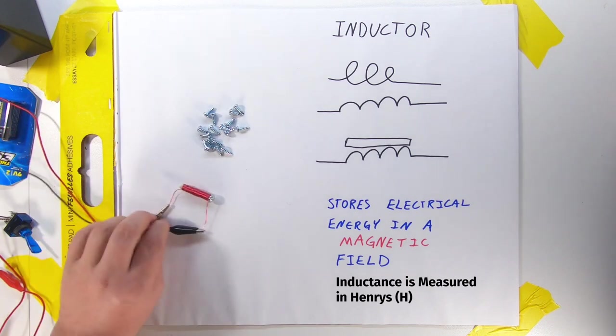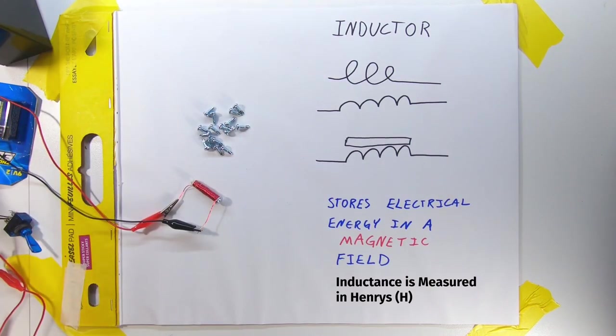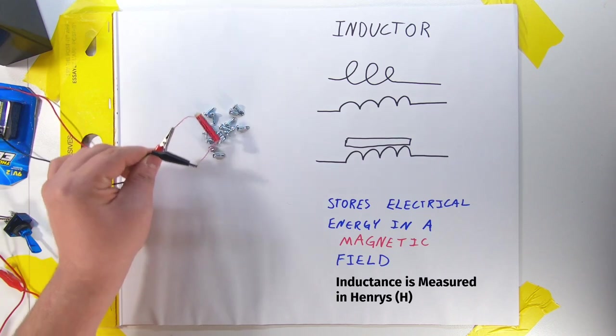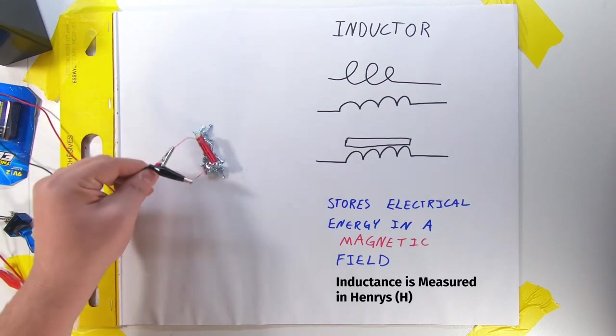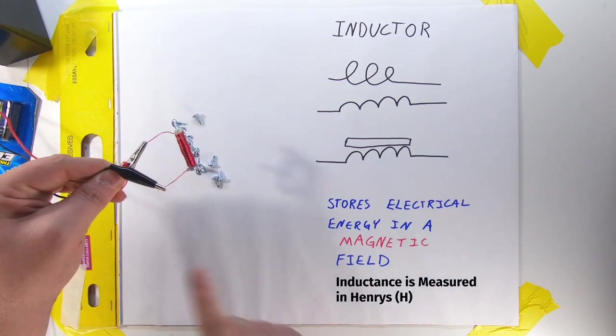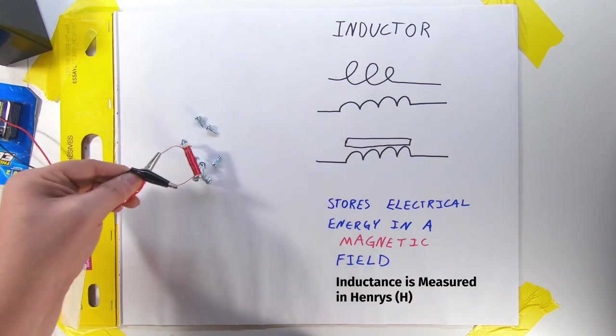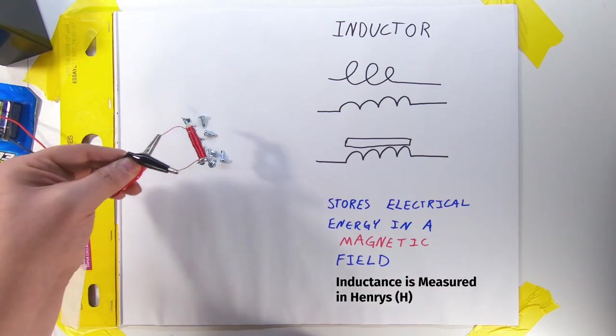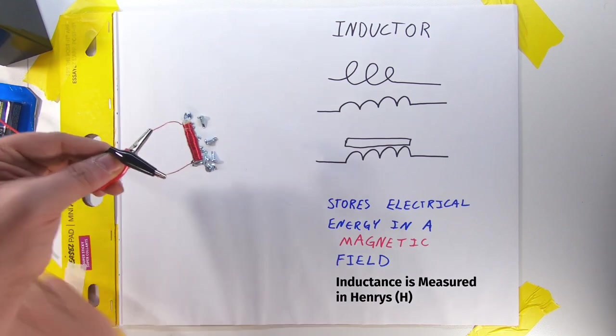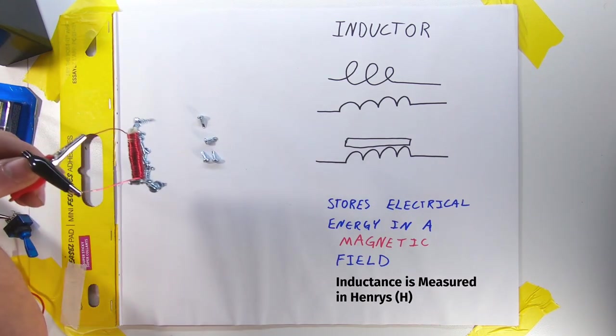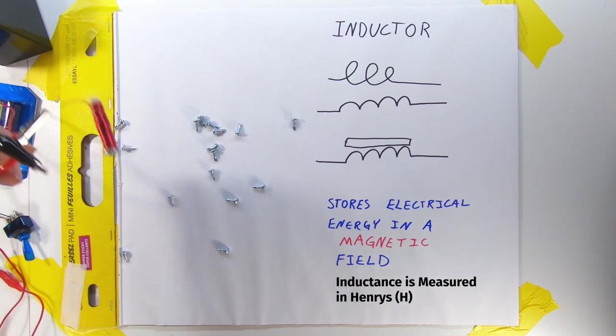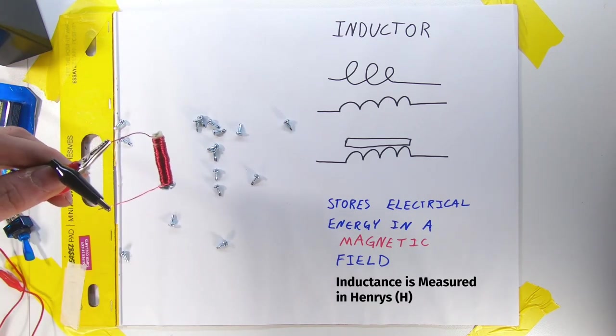No good, right? So good. Oh, now it's a magnet. Because the electrical energy is going around, creating a magnetic field, inducing magnetic properties in the iron. But if I cut the electrical power, all the screws fall away.